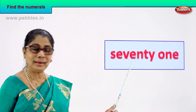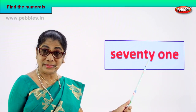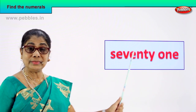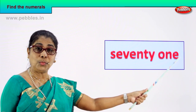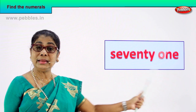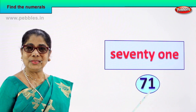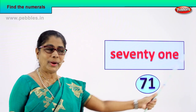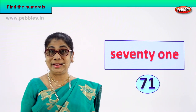Spell. S-E-V-E-N-T-Y, seventy. O-N-E, 1. Seventy-one. How do we read this? Seventy-one. How do we write the numeral? Seven and one — seventy-one, 71. You learn to write the numeral for this number. Good.